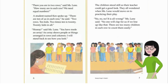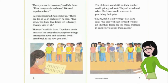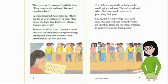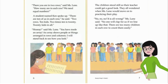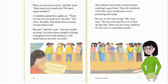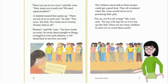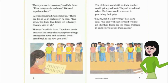'An array shows people or things arranged in rows and columns. I will stand back to see how you look.' The children stood still so their teacher could get a good look. They all wondered when Ms. Lane would move on to practicing their play. 'No, no, no. It's all wrong,' Ms. Lane said. 'No one will clap for us if we line up like that. There are too many children in each row to count them easily.'